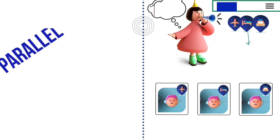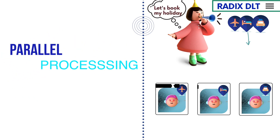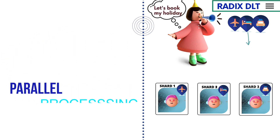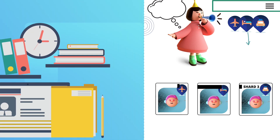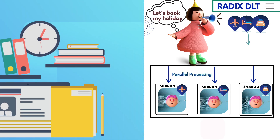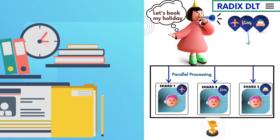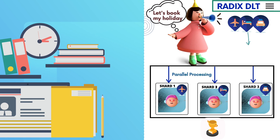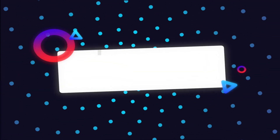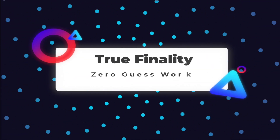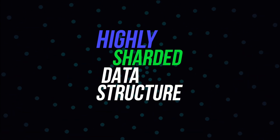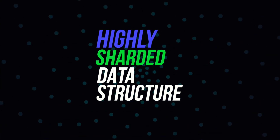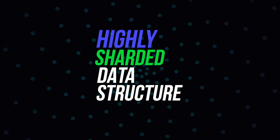Meaning once a transaction is final, it is final — no waiting for several blocks and wondering if your transaction has gone through. More importantly, no rollback of dependent transactions. Radix protocol is built around a highly sharded data structure enabling unprecedented levels of scale for a distributed ledger.